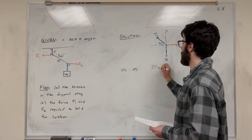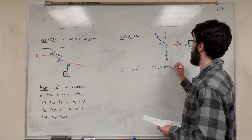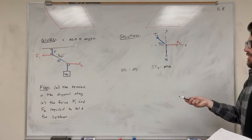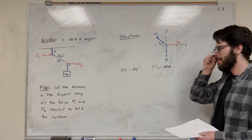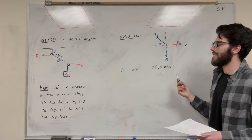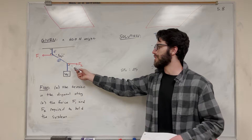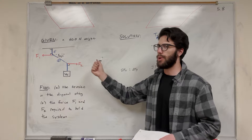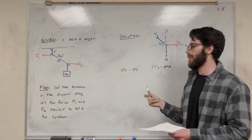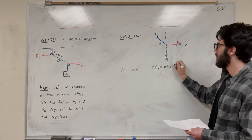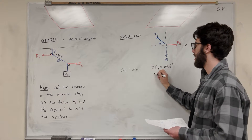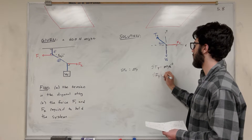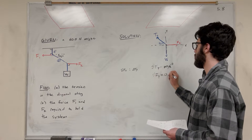Sum of the forces in the Y direction is equal to mass times acceleration. But this system is at equilibrium — nothing is moving. So there's no acceleration and we can cancel that out. That tells us that the sum of the forces in the Y direction is equal to zero.